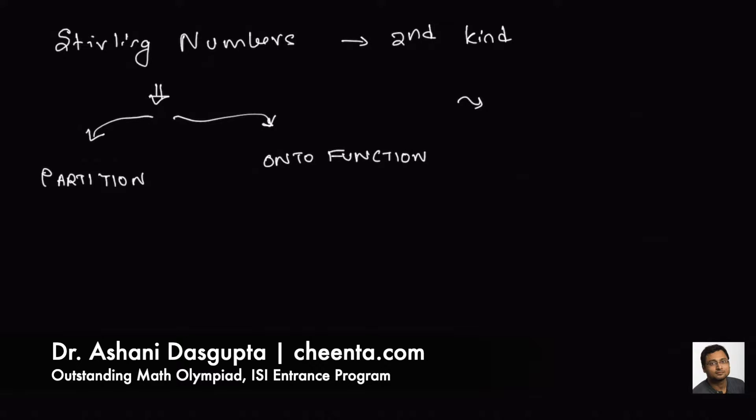The Stirling numbers of the second kind are taught in the Cheenta Math Olympiad program and the ISI CMI entrance program. So you can check the link in the description for that.